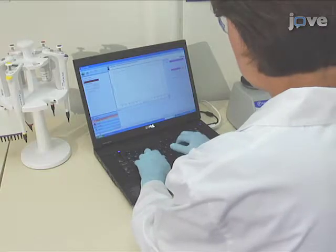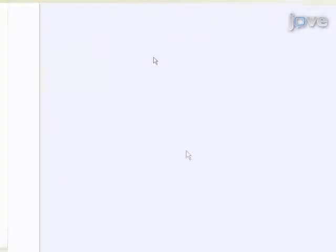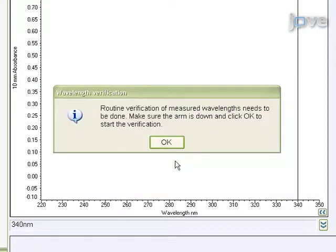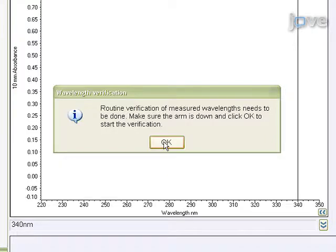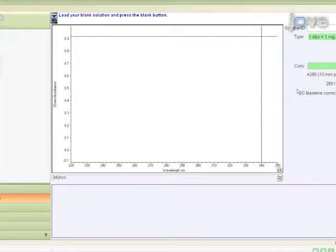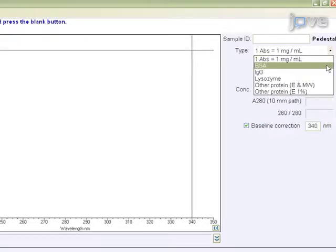To begin this procedure, select the protein A280 application from the main menu. If the wavelength verification window appears, ensure the arm is down. Select the type of sample to be measured from the drop-down list. The default setting is recommended for most unknown protein mixtures in which one absorbance equals one milligram per milliliter.